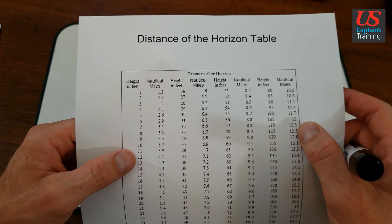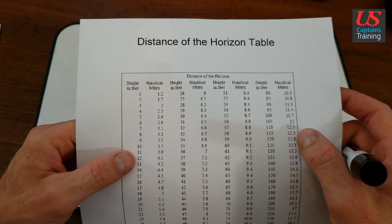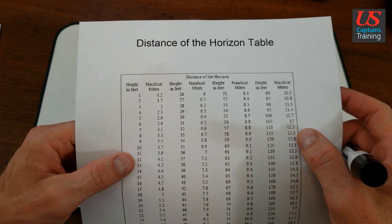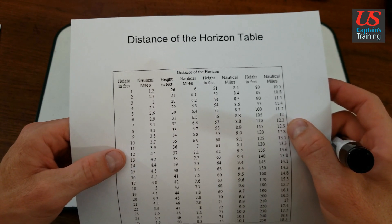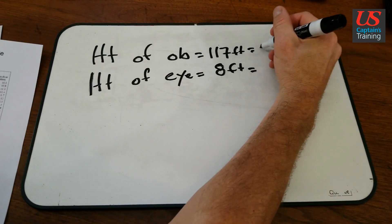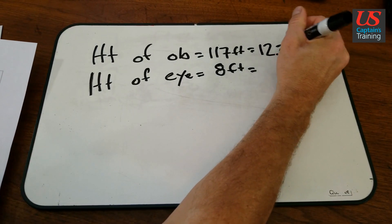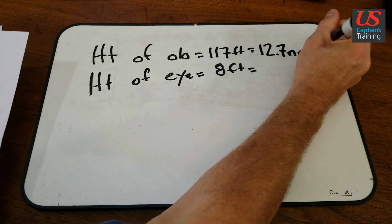So we have 12.5 and 12.8. So we're looking at, let's say, 12.7. I'm going to round it to 12.7 nautical miles.